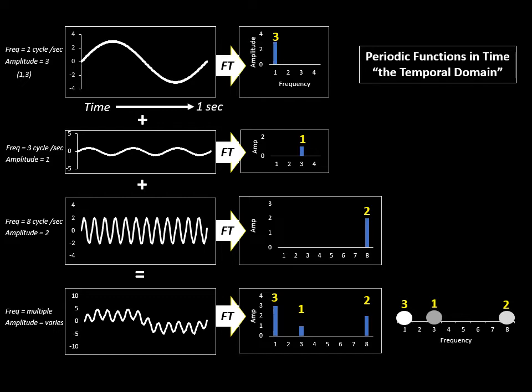We see that that complicated waveform consists of frequencies of one cycle per second with an amplitude of three, three cycles per second with an amplitude of one, and eight cycles per second of amplitude two.